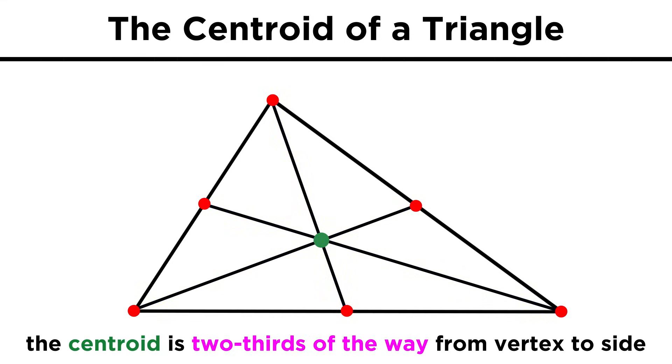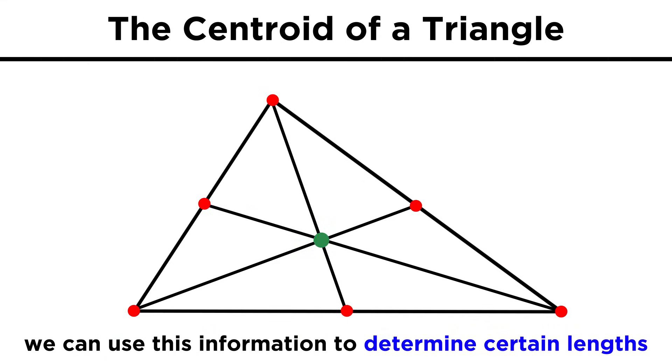The centroid is always two thirds of the way from one vertex to the opposite side, so that means that this distance is twice this, this distance is twice this, and this distance is twice this. This allows us to determine the lengths of certain line segments given others.